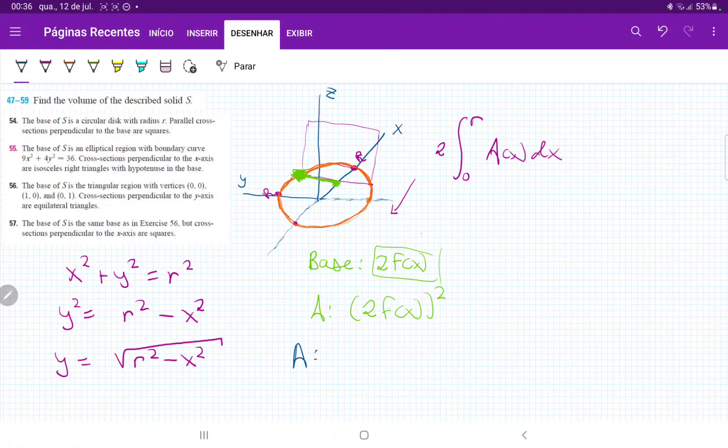The area now is (2f(x))², which is (2√(r² - x²))², which gives us 4 times (r² - x²). The root cancels out with the square, so we have 4(r² - x²).